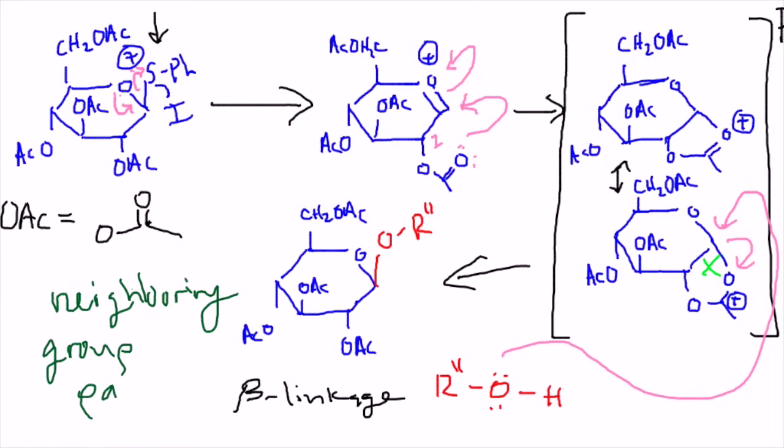It can help us drive more of the beta linkage to be formed in a glycosylation. Now, there's another concept that can do the opposite. It can preferentially drive formation of an alpha glycosidic linkage.